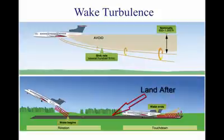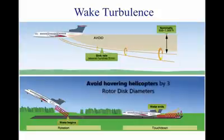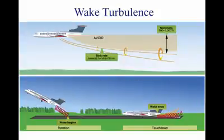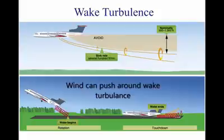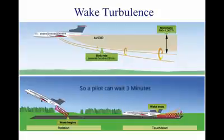Touch down after the point at which the other aircraft's wheels contacted the runway. A hovering helicopter generates a downwash from its main rotors similar to the vortices of an airplane. Pilots of small aircraft should avoid a hovering helicopter by at least three rotor disc diameters to avoid the effects of this downwash. Wind is also an important consideration when dealing with wake turbulence, because it can push around wake turbulence. For example, if there's a 10-knot wind, it will push the wake turbulence in the direction of the wind at a rate of 1,000 feet per minute. Pilots may also wait approximately three minutes for the wake to dissipate.